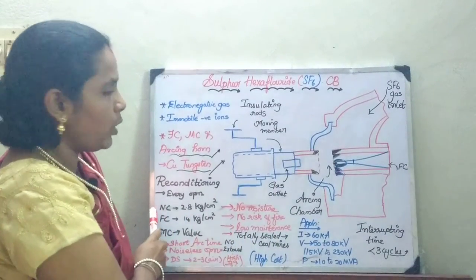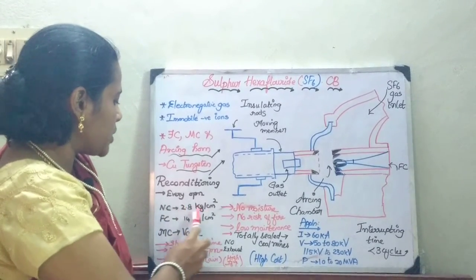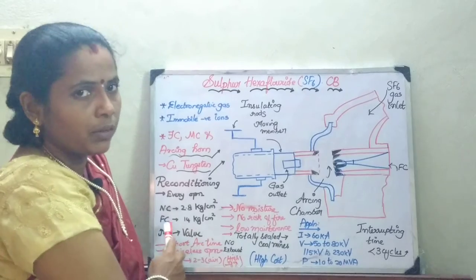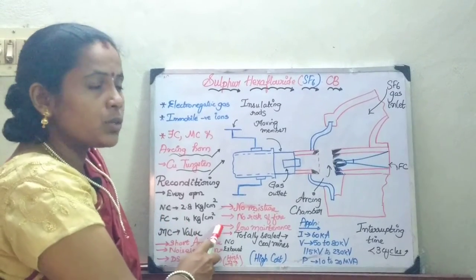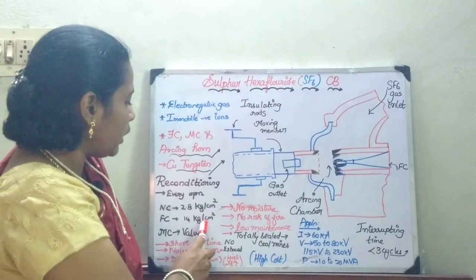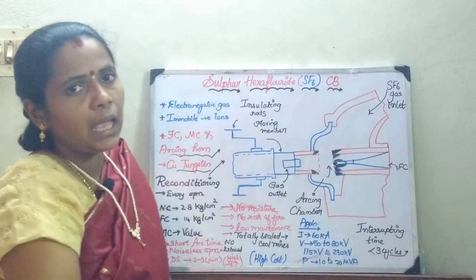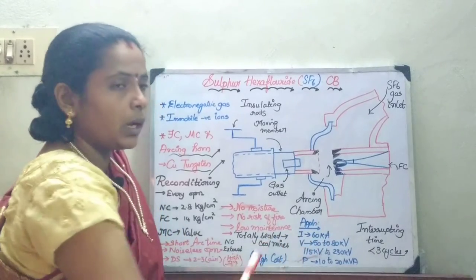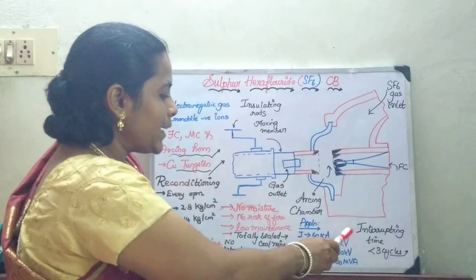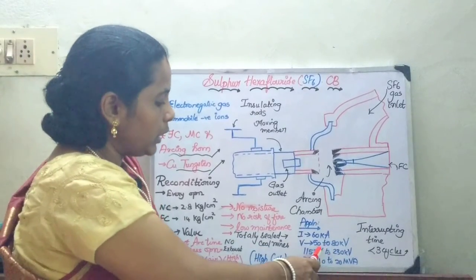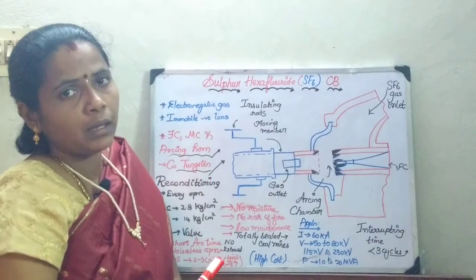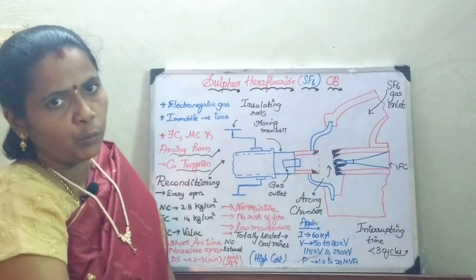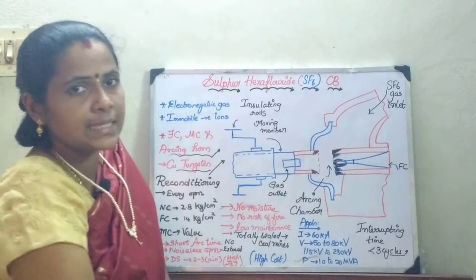Under normal conditions, the pressure is maintained at 2.8 kg/cm². But under fault conditions, the pressure is let out at a very high pressure of 14 kg/cm² in order to quench the arc as soon as possible. This proves to be an efficient circuit breaker used for interrupting a current rating of 60 kV and a voltage rating up to 80 kV, and can be used for 150 to 230 kV. Whereas the air blast circuit breaker was able to be used for 110 kV with a power rating of 10 to 20 kV. The interrupting time is found to be less than 3 cycles.